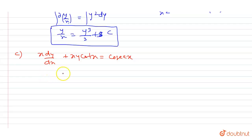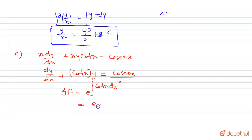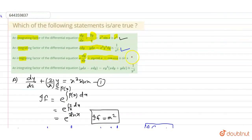We get dy/dx plus cot x · y equals cos x / x. We have to find the integrating factor of this differential equation, which is linear in y. Using the formula, integrating factor equals e to the power of ∫cot x dx. The integration of cot x equals ln|sin x|. So by log property, we can say the integrating factor equals sin x. So option C is also correct.